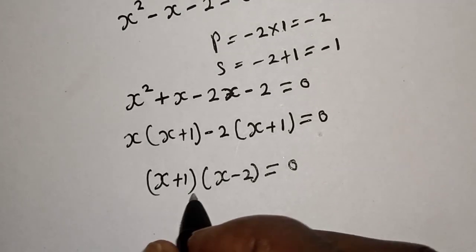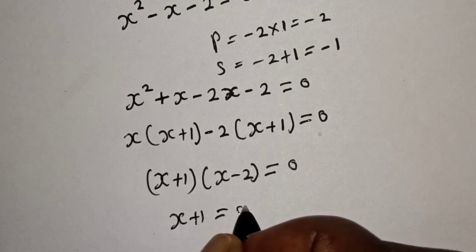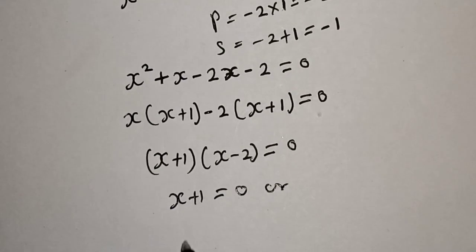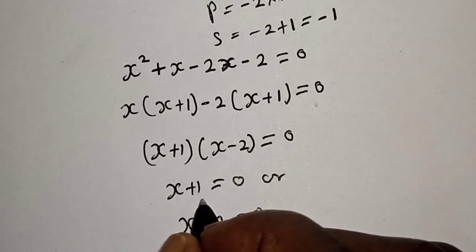Now there are two cases here. x plus 1 is equal to 0, or x minus 2 is equal to 0.